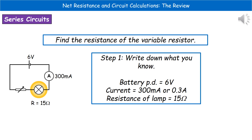A typical question is: find the resistance of the variable resistor, given a circuit diagram. The first thing to do is write down what you know. From our diagram: the potential difference across the battery is 6 volts, the current is 300 milliamps — converting straight away to 0.3 amps — and the resistance of the lamp is 15 ohms.